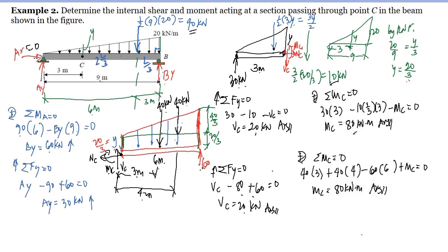This 80 kilonewton-meter result is the same as our previous answer from the left portion. So it is up to you which solution to use — the left portion or the right portion — since both give the same answer. However, in this case, the solution using the left portion is easier compared to using the right portion.